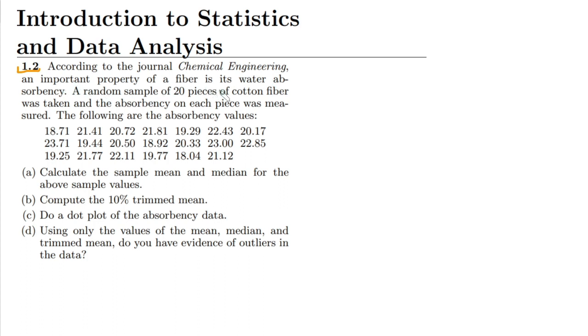The statement here is: according to the journal Chemical Engineering, an important property of a fiber is its water absorbency. A random sample of 20 pieces of cotton fiber was taken and the absorbency on each piece was measured. The following are the absorbency values. These are the values which have been obtained from the fiber.